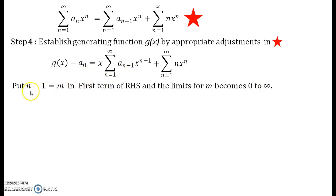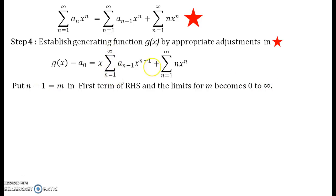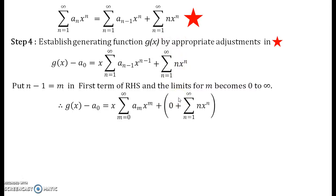Now substitute m = n-1 in the first RHS term. The limits for m go from 0 to infinity, since when n=1, m=0, and the upper limit becomes infinity. For the second term, I am going to add 0 to that term. Adding 0 will not make a big difference but it will help us.